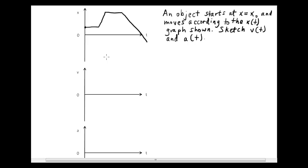Welcome back to Physics 141 Online. What I'd like to do here is show an example problem that gives an illustration of how we can use graphical information in a qualitative way — without using any numbers — to get information relating position, velocity, and acceleration behavior of an object.